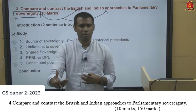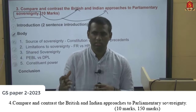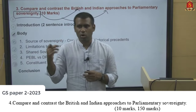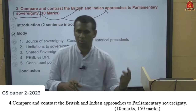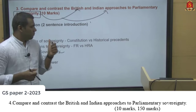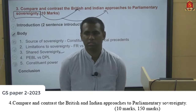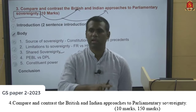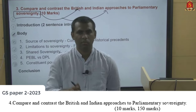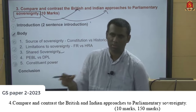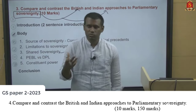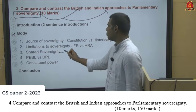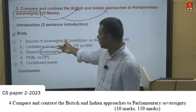Another difference is shared sovereignty: in Britain, all law-making power is vested exclusively in Parliament. In India, Parliament can only legislate on List I and List III matters of the Seventh Schedule, while List II (State List) matters belong to state legislatures. India's federal setup divides sovereignty between Parliament and state legislatures — another key limitation on parliamentary sovereignty in India.